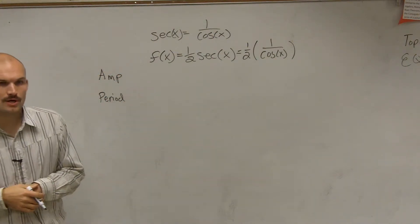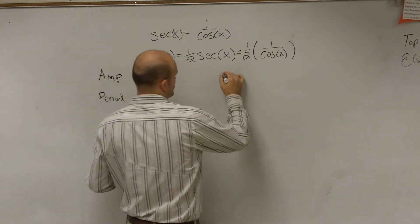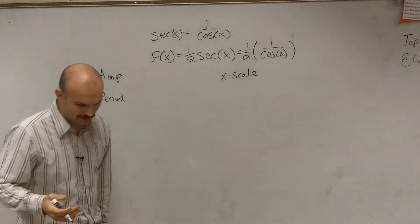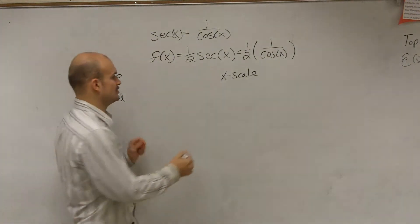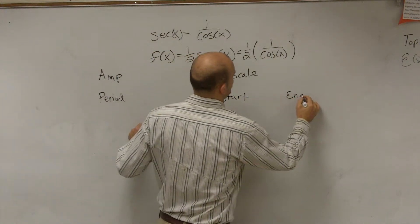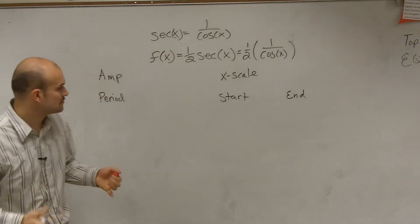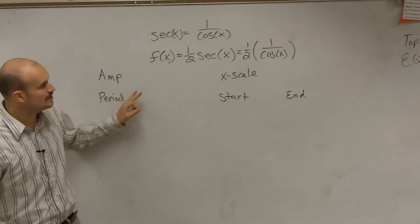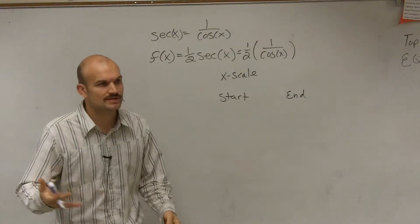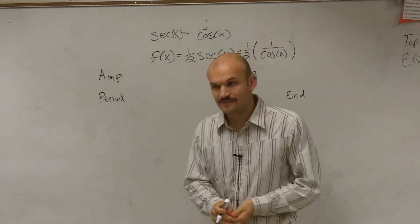So there's a couple things that we look at as far as determining the important points to graph our trigonometric functions. To graph our trigonometric functions, we like to start with finding the amplitude, the period, the x scale, and the start and the end. There's just little formulas or expressions that we use to find this information.